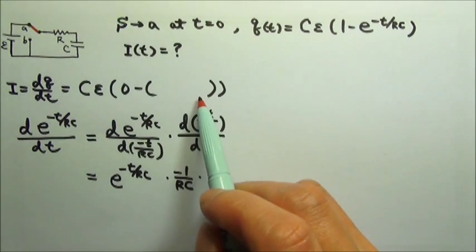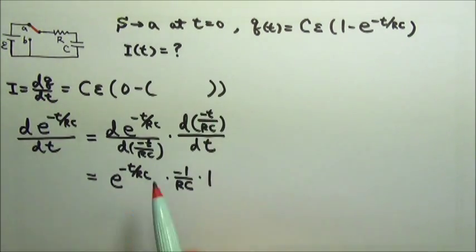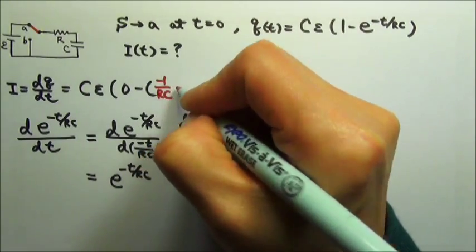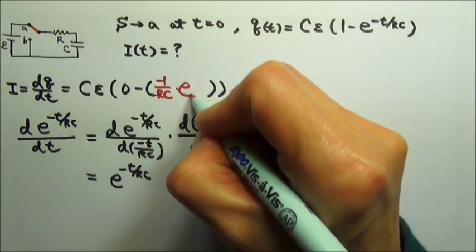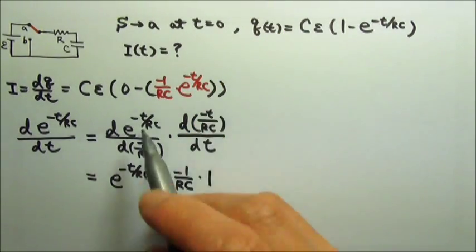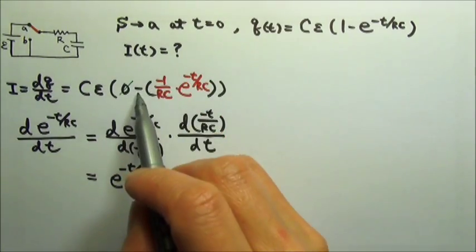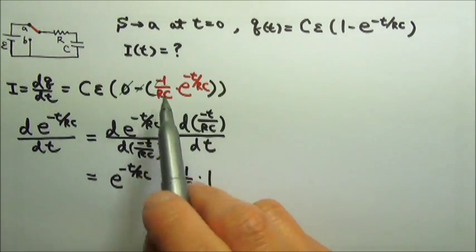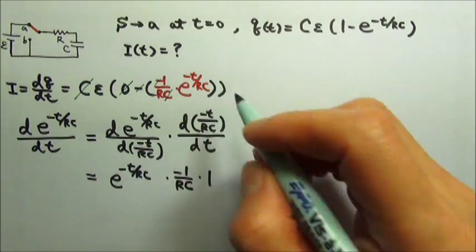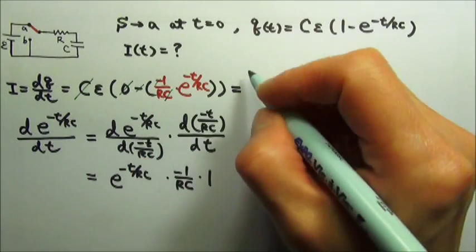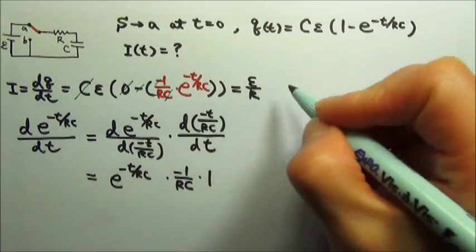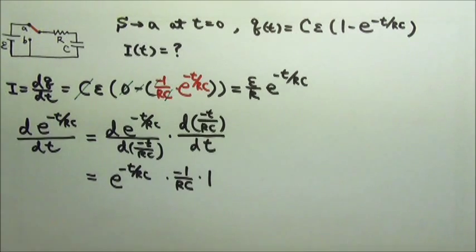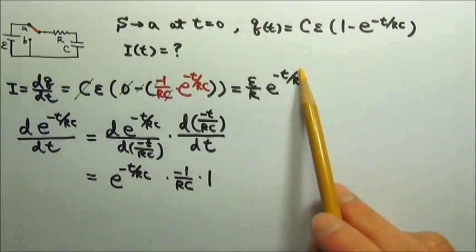So this is the time derivative of this term, which gives us negative 1 over RC times the exponential decay e to the negative t over RC. The zero term is gone, and negative times negative cancels, giving us CE divided by RC. The C's cancel, so what we get is E divided by R times the exponential decay e to the negative t over RC. So the current as a function of time is this exponential decay.